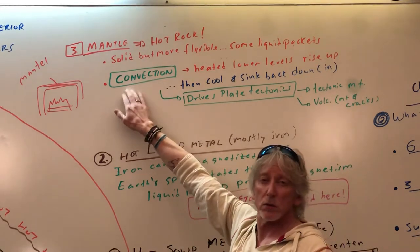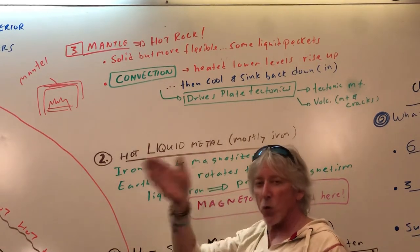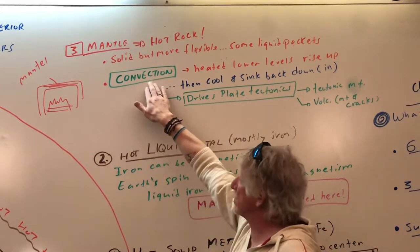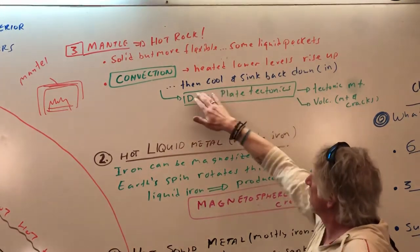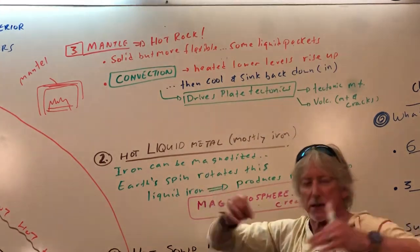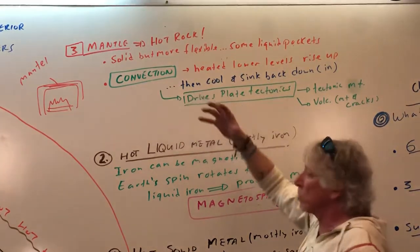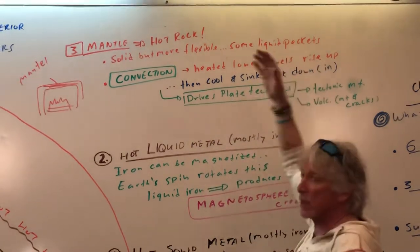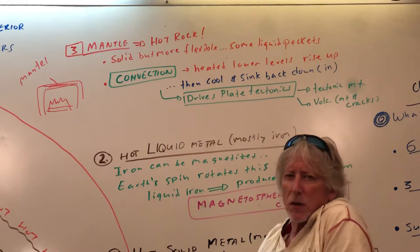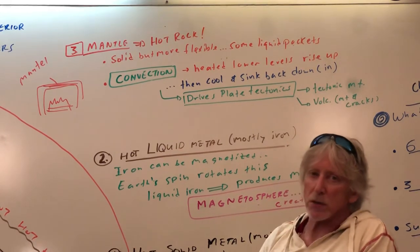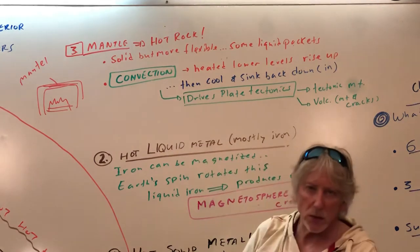But what happens, and this is a process you'll see on the stovetop, we'll see it in our atmosphere, we'll see it inside stars. This is very, very important. Convection. Vector is a word for direction. What's the direction of this hot rock? Well, heated lower levels, they get heated down there. Rise up. They expand. They become less dense, and they rise up. Then, when they get near the surface, they cool some, and as they cool, they kind of pack down a little more dense, and they sink back down in, and then they heat up.